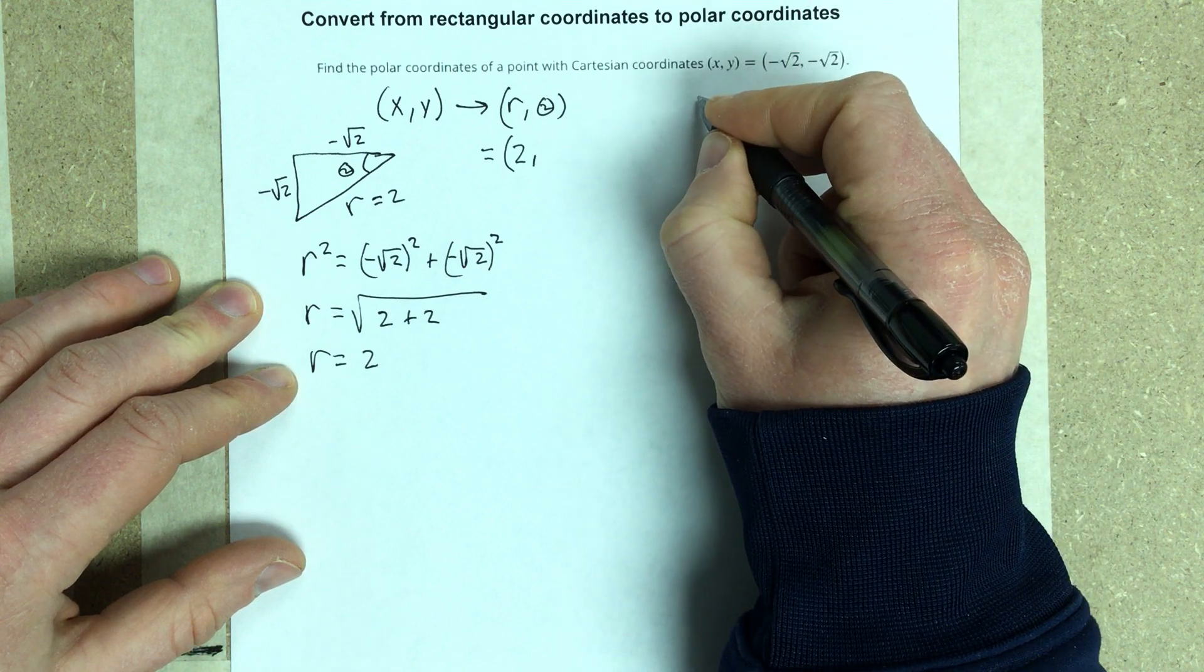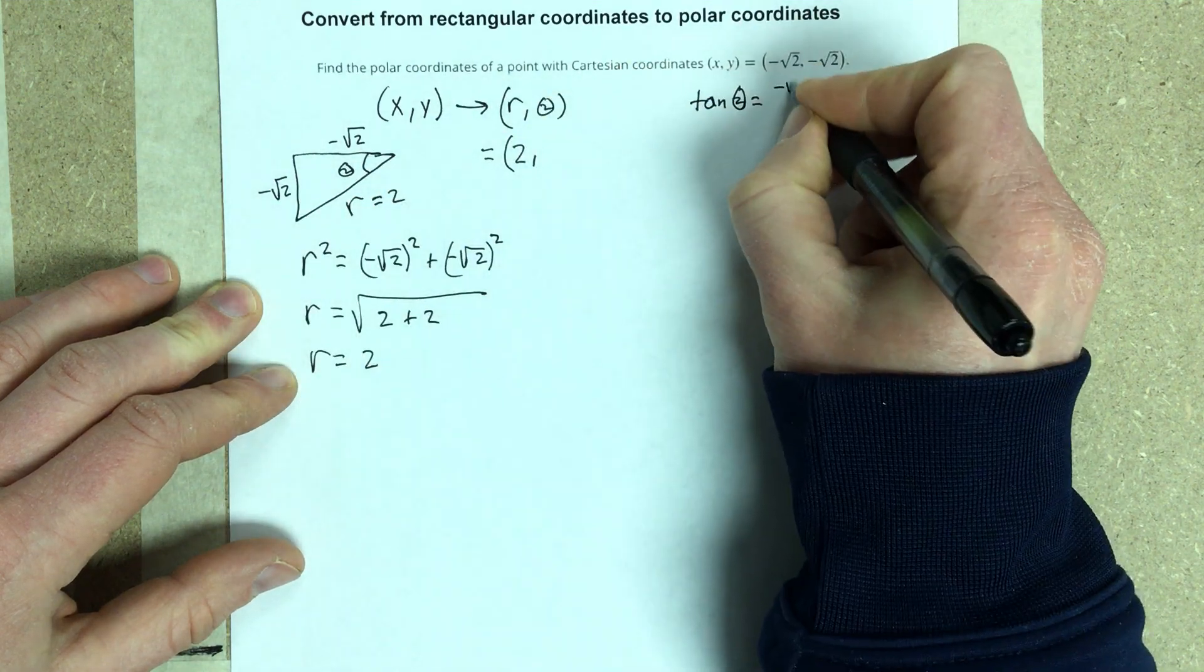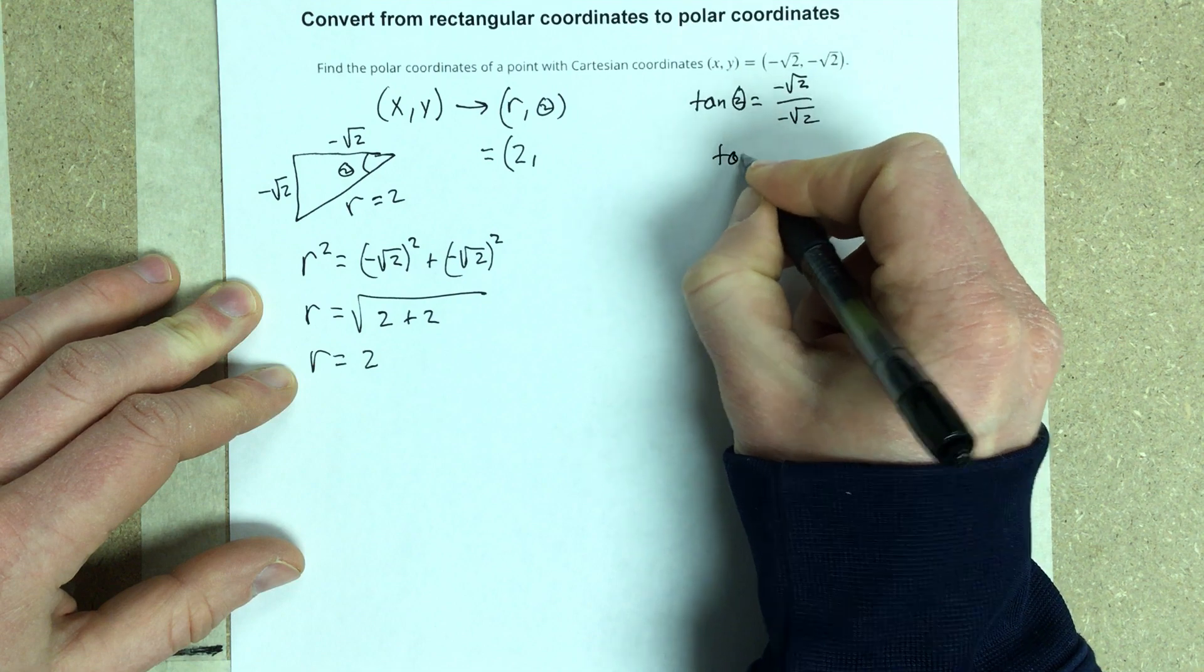So tangent theta is equal to negative root 2 over negative root 2, which means tangent theta is equal to 1.